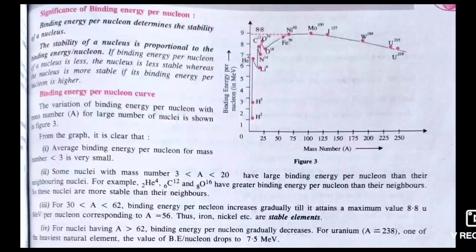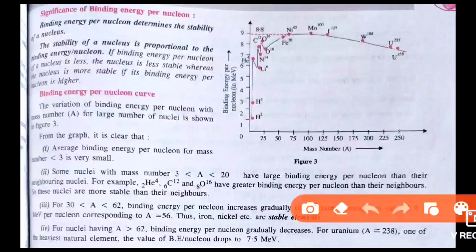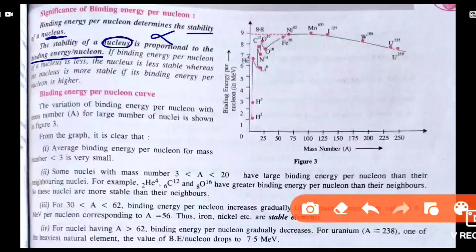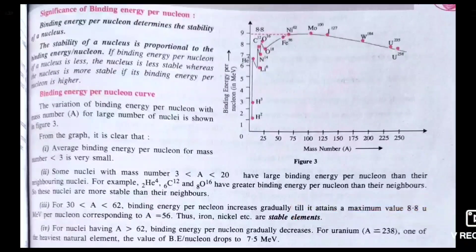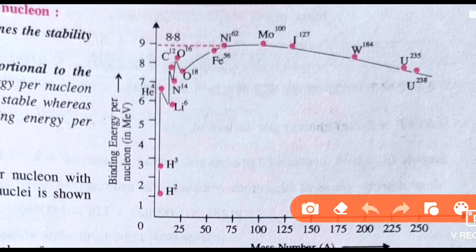Next is the graph — this graph is important for 3-mark questions, and sometimes a 2-mark question asks to explain binding energy per nucleon. The graph plots mass number on one axis and binding energy per nucleon on the other. Focus on the curve — first the graph goes straight, starting from hydrogen.